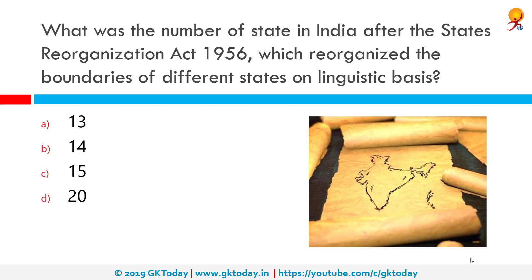What was the number of states in India after the States Reorganization Act 1956, which reorganized the boundaries of different states on a linguistic basis? The correct answer is 40. The States Reorganization Act 1956 was a major reform of the boundaries of India's states and territories, organizing them along linguistic lines.